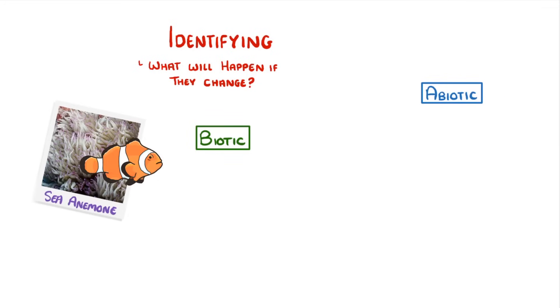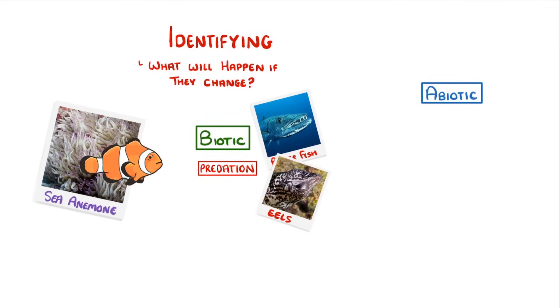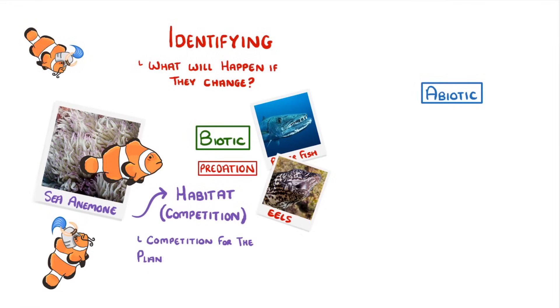For biotic factors we have predation by bigger fish or eels. We have the sea anemone itself, which acts as the clownfish's habitat, so there could be competition for that habitat. There could also be competition for the plankton and algae that the clownfish eats, and always remember the burden of disease that the animals have.